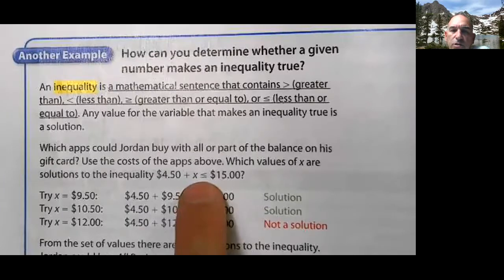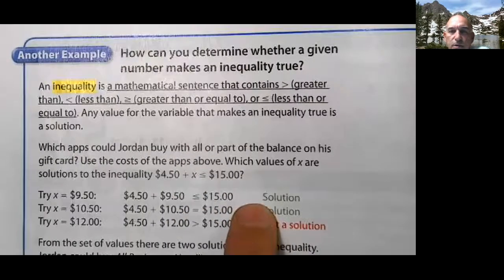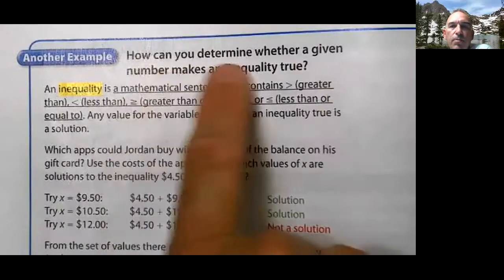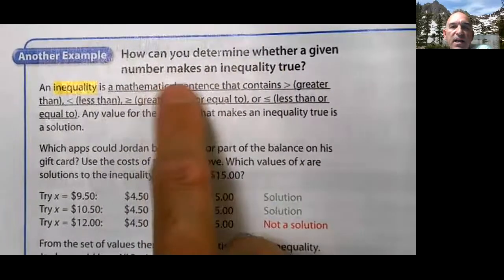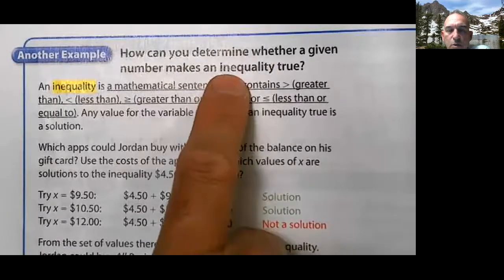When we have this new symbol in here, an inequality, we find we look down here and wait a minute, there's two solutions. Wait a minute, so what's going on? How can you determine whether a given number makes an inequality true? We just did it with an equation, now it's an inequality.